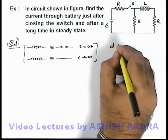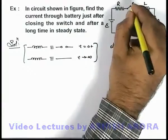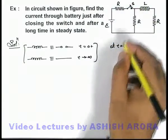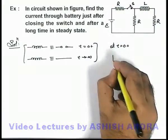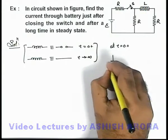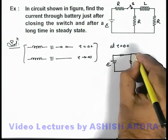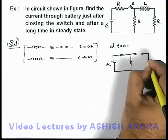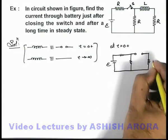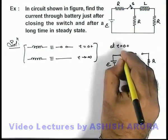So if we calculate just after t equal to zero plus when the switch is closed, the inductor behaves like open circuit so we can draw the equivalent circuit again. Here the inductor will act like an open circuit, and the situation of circuit is in this manner.